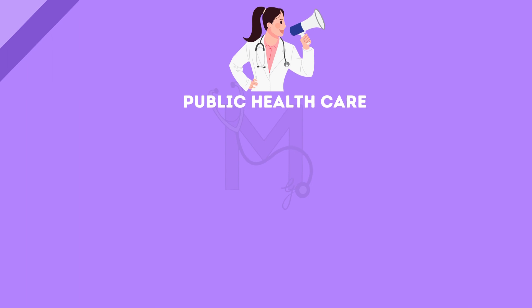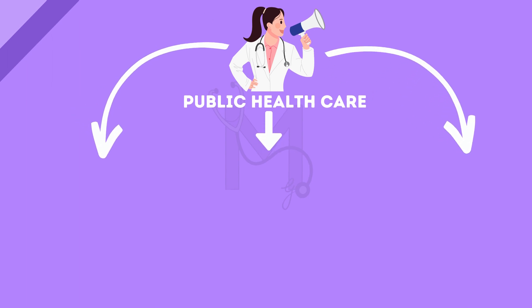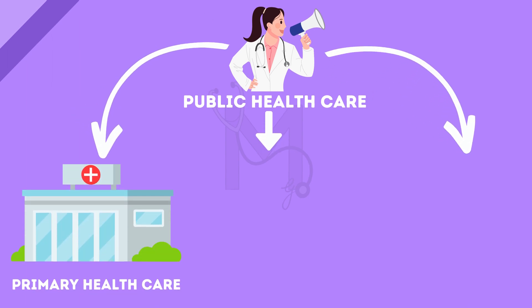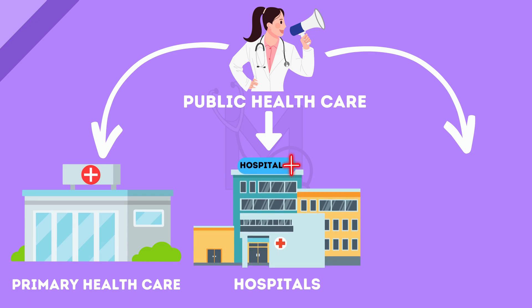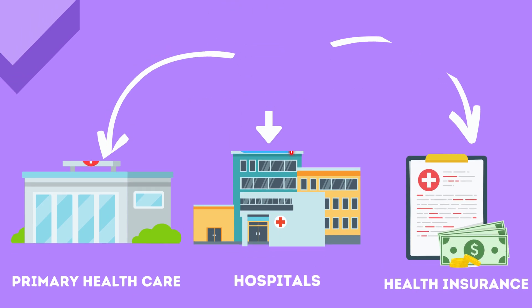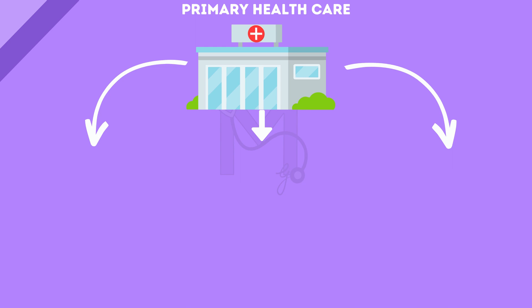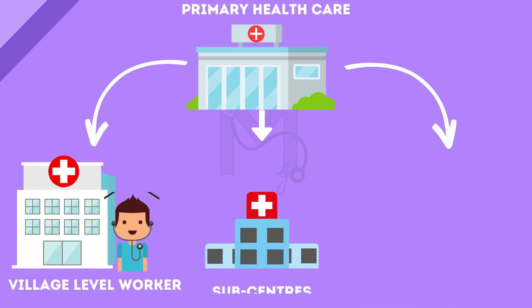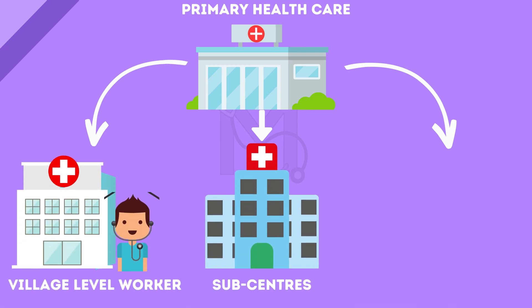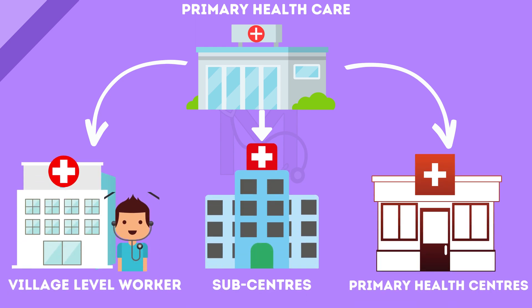The public health sector can be studied under three headings: primary healthcare, hospitals, and health insurance schemes. Primary healthcare is further divided into village level workers, sub-centres, and primary health centres. We will learn more about this in the upcoming video.